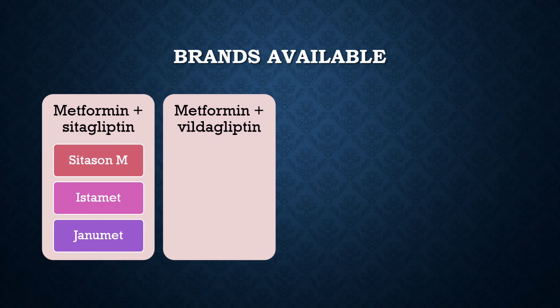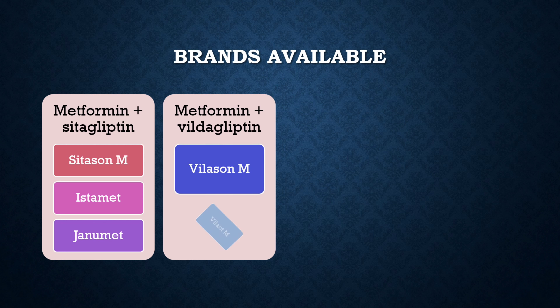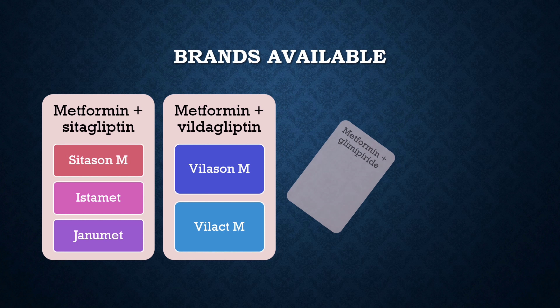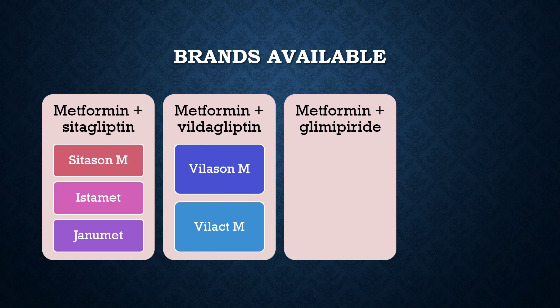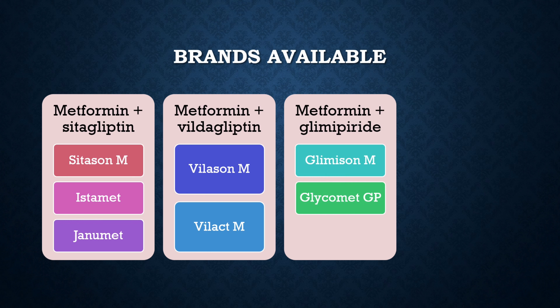For metformin plus vildagliptin, also a DPP-4 inhibitor, brands available are Vilasan M or Vilact M. For metformin plus glimepiride, a sulfonylurea, you can use Glimison M1, M2, M3, or Glycomat GP1, GP2, GP3, or Glimistar M1, M2, M3.